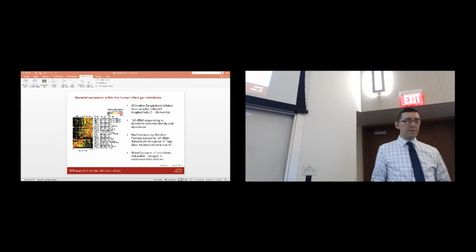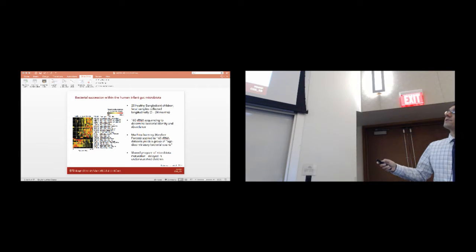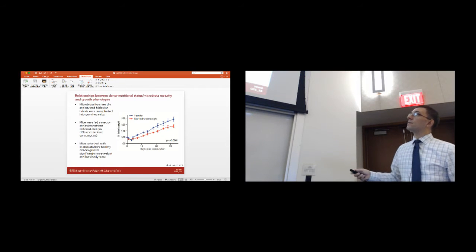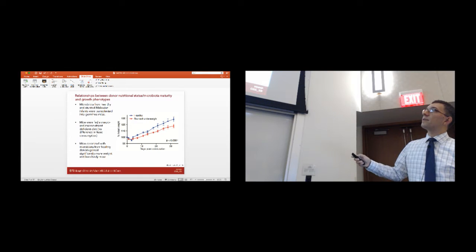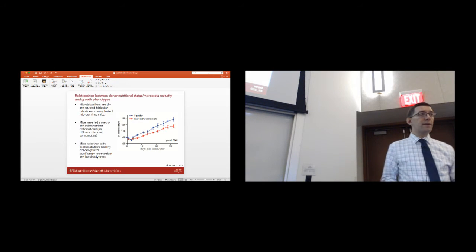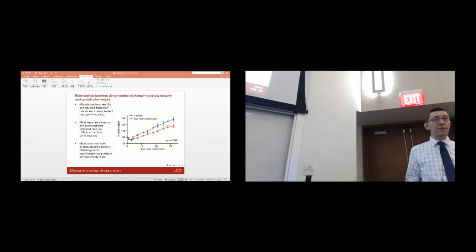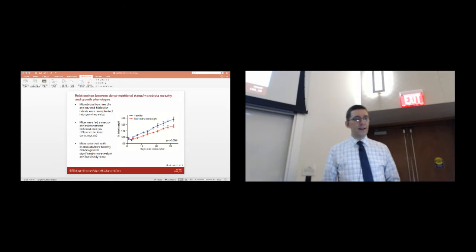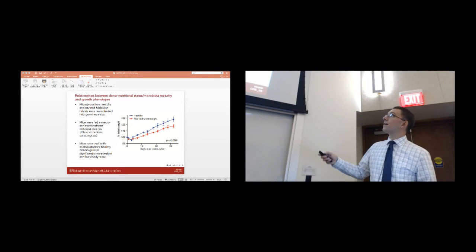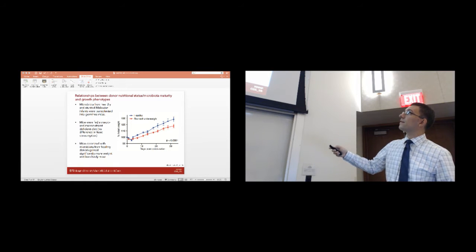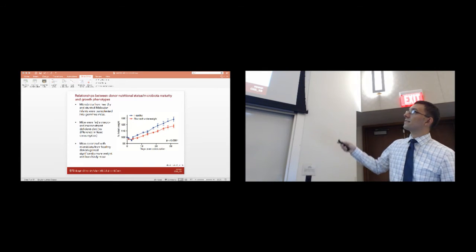Another study conducted by Laura Blanton in the lab suggested relationships between donor nutritional status, microbiota maturity, and growth phenotypes. Laura looked at the microbiota from healthy and stunted Malawian infants transplanted into germ-free mice. She fed these mice a macro- and micronutrient-deficient diet and found that even though there was no difference in food consumption, mice colonized with a microbiota from a healthy donor gained significantly more weight and lean body mass over time than mice colonized with a microbiota from a stunted donor—visible in the plot of weight on the right.